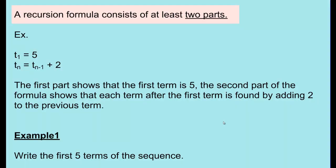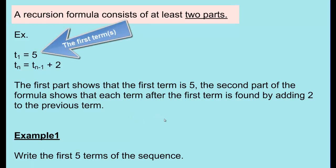A recursion formula always consists of at least two parts. For example: T1 equals 5, and Tn equals Tn minus 1 plus 2. The first term is 5, and any term after it is equal to the term before it plus 2. The first part, T1 equals 5, tells us what number the sequence starts with. The second part, the general term, gives us the rule to follow for each subsequent term.